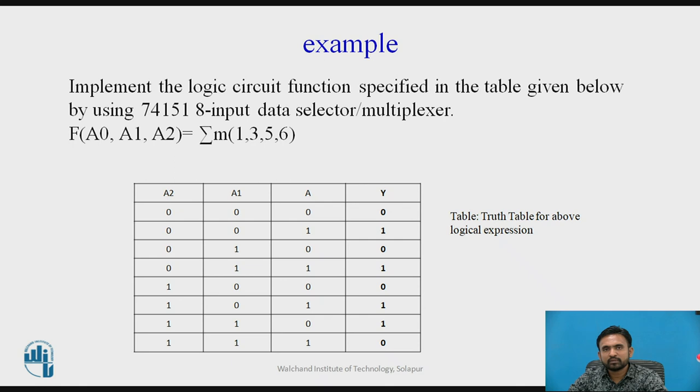Now in the multiplexer part we have different kind of implementation processes. We can implement different applications with the help of multiplexer. Now here I have an example to implement a logic circuit using 74151 IC. This 74151 IC is nothing but 8 input multiplexer and currently in this example I have to implement some min terms with the help of our multiplexer problem.